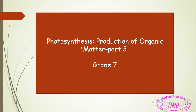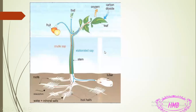Our lesson today is about photosynthesis — this is the third part: production of organic matter. We will summarize the photosynthesis process using a picture that shows all the processes and actions that happen. As you can see, I have a green plant, which is the chlorophyllic plant. The diagram shows the needs of the plant taken from its surroundings and the products of the plant.